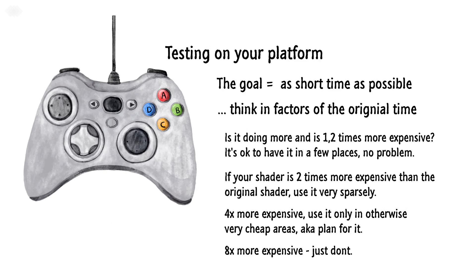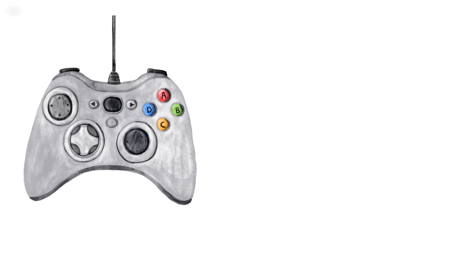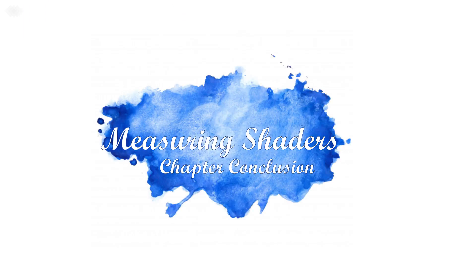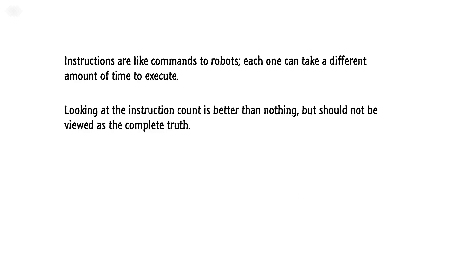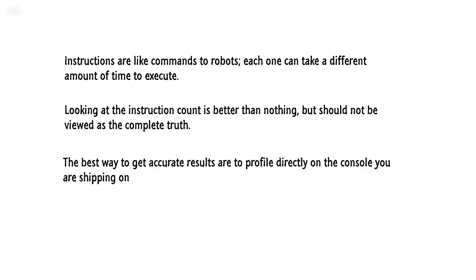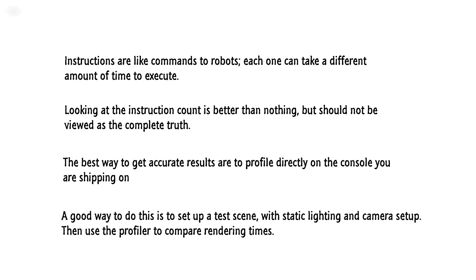To conclude this part: instructions are like commands to a robot, and each one can take a different amount of time to execute. Looking at the instruction count is better than nothing but should not be viewed as a complete truth. The best way to get accurate results is to profile directly on the console you're shipping on. A good way to do this is to set up a test scene with static lighting and camera setup, then use a profiler to compare rendering times.